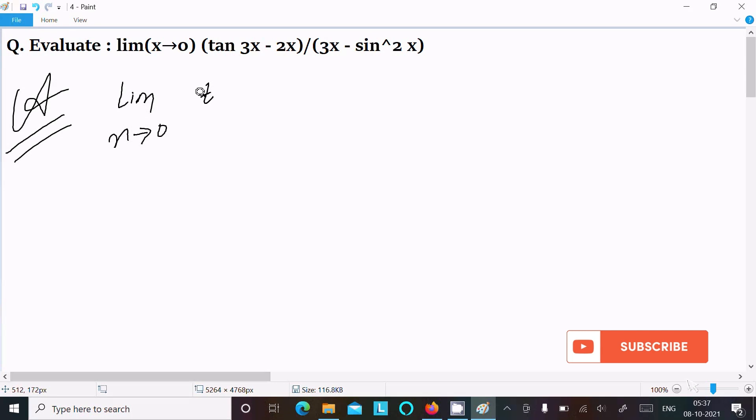Here tan 3x minus 2x divided by 3x minus sin squared x. We can easily achieve the output if I divide with x, so writing here dividing with x.